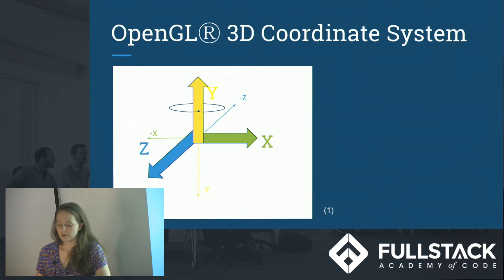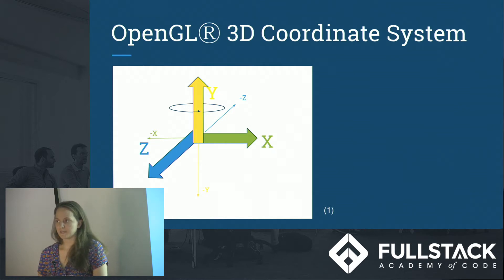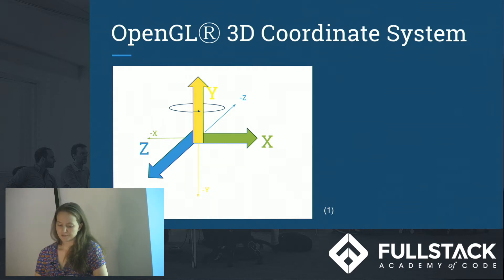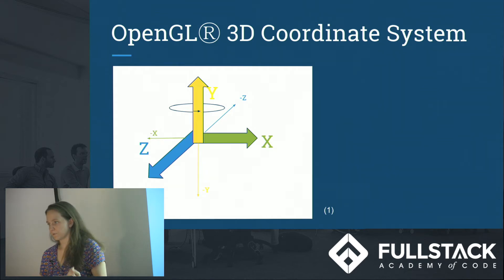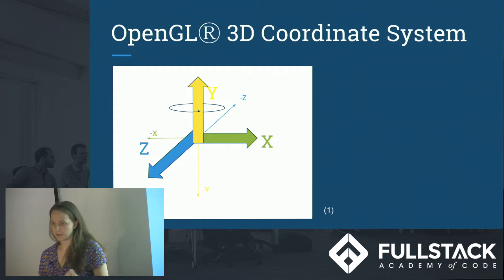Now that we can have our 360 view, we need to know how to get from one to the other, and so that means we need to know about our coordinate system. React VR transformations use the right-handed OpenGL coordinate system, and so we're mostly going to be — in terms of going from one view to the next — wanting to have rotation around the y-axis.